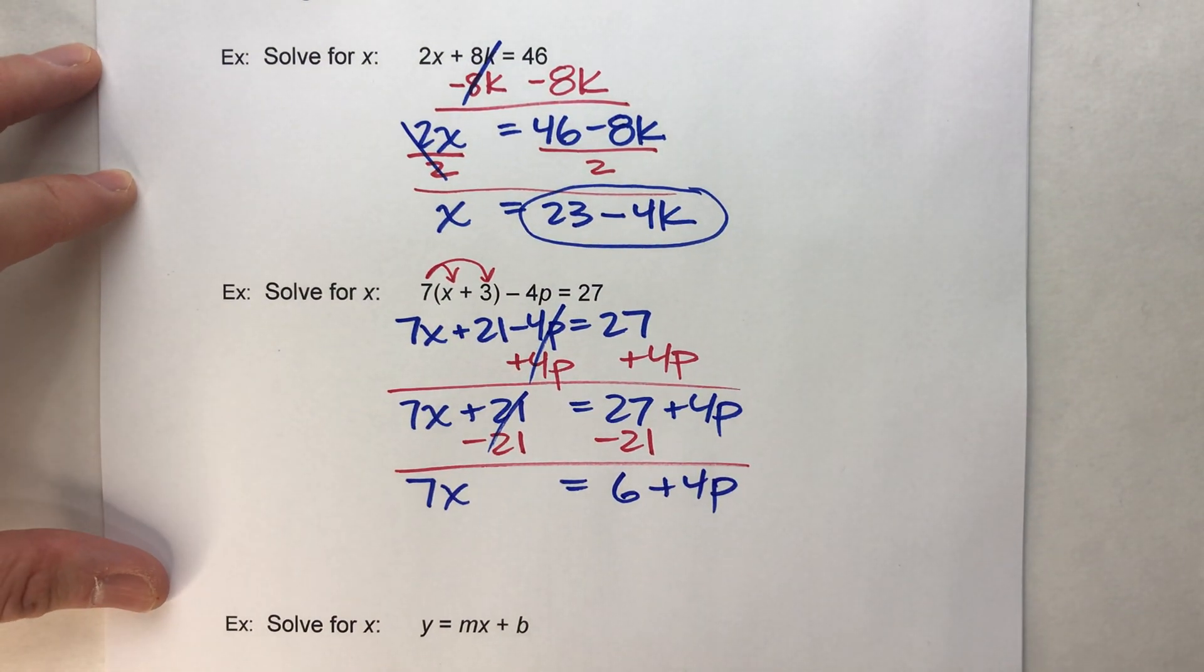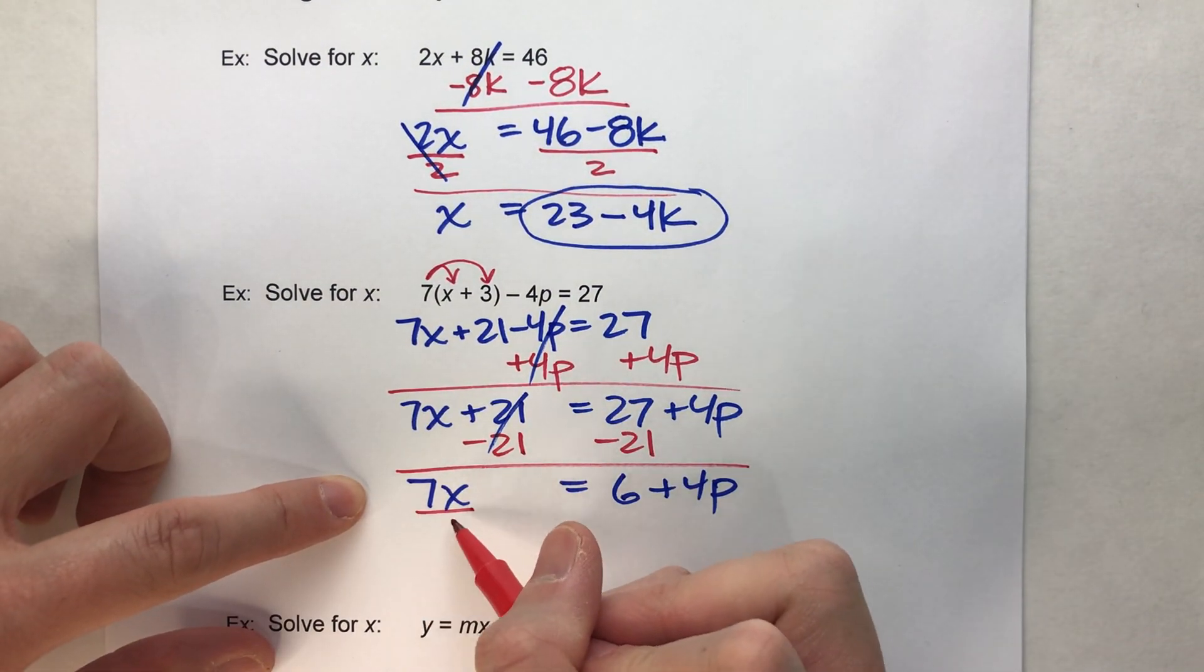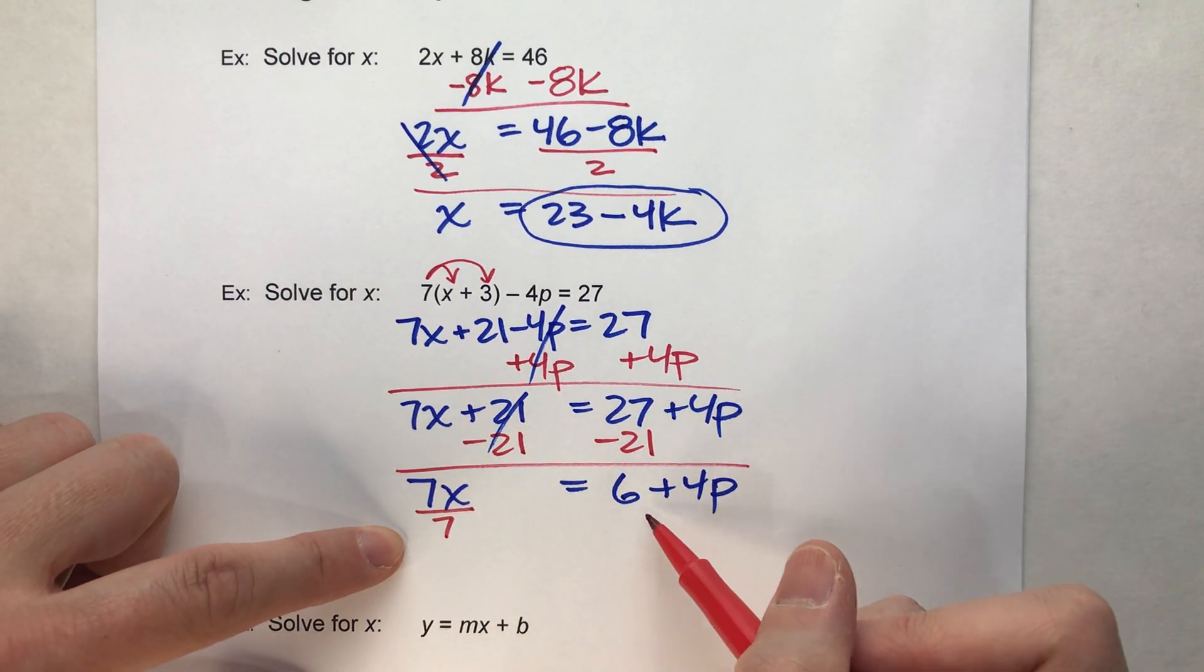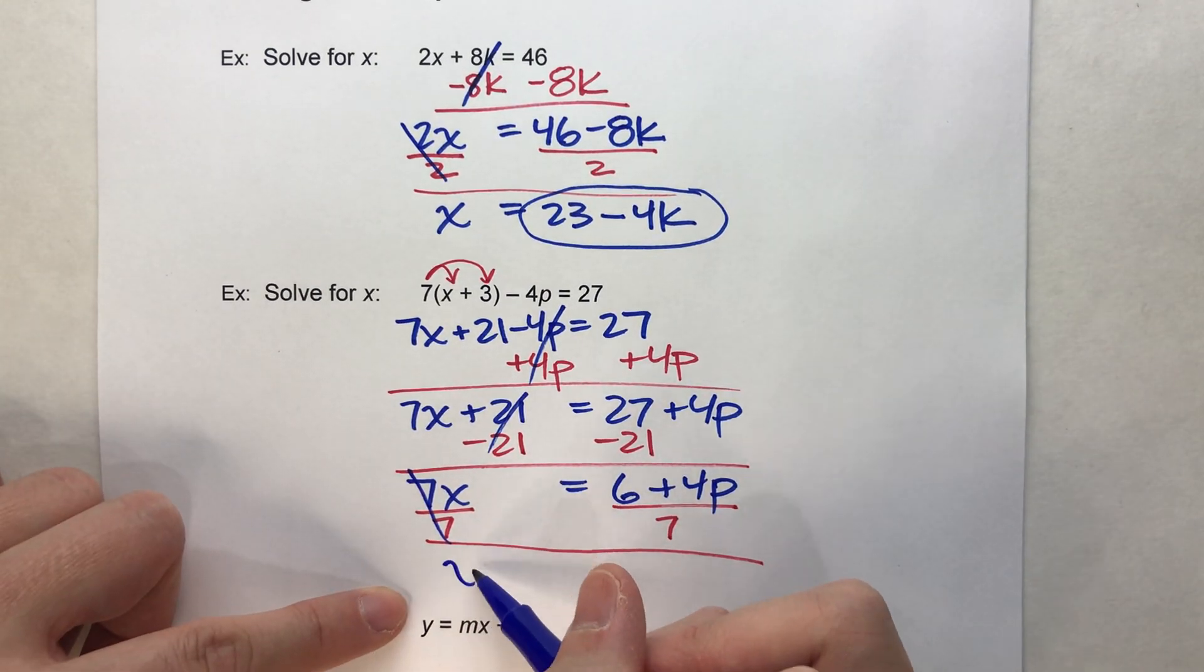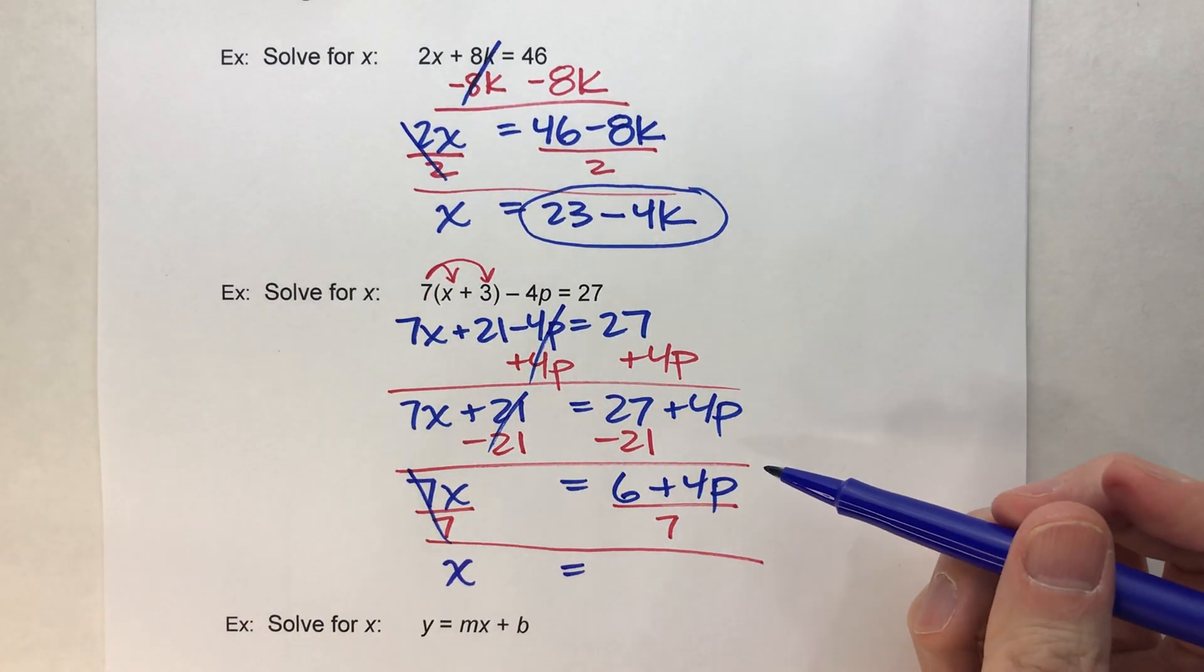Almost done. Now, to get x by itself, I'll divide by 7. What I do to one side, I have to do to the entire other side. And when I do that, x drops down, equals drops down.